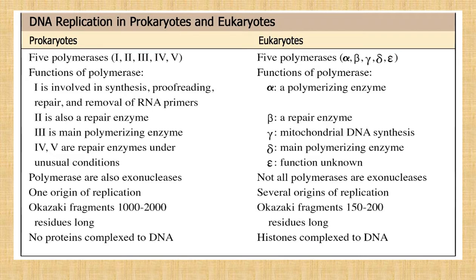To summarize the functions: DNA polymerase I is involved in synthesis, proofreading, repair, and removal of RNA primers — making it the most versatile polymerase. DNA polymerase II is a repair enzyme, while DNA polymerase III is the main polymerizing enzyme in prokaryotes. DNA polymerases IV and V are repair enzymes used under unusual conditions. In eukaryotes, alpha is a polymerizing enzyme, beta is a repair enzyme, delta is the main polymerizing enzyme, gamma is a mitochondrial DNA synthesis enzyme, and eta has an unknown function.